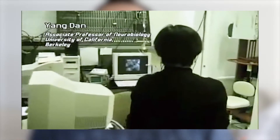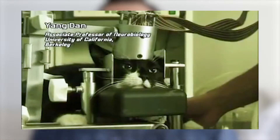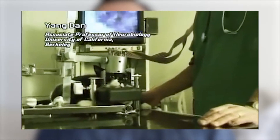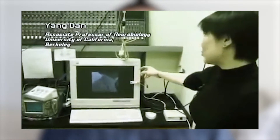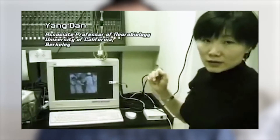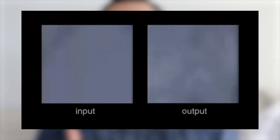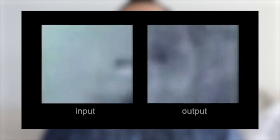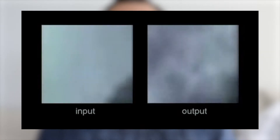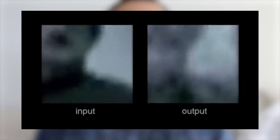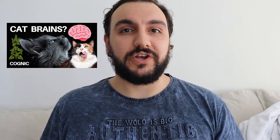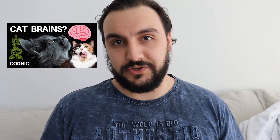In 1999, Dr. Yang Dan at the University of California, Berkeley, showed cats movies and recorded their brain activity. Using the brain activity, she reconstructed what they were seeing in surprising detail. Remember, this was 22 years ago, and the fact that she accomplished this with the technology of the 1990s is extremely impressive. On the left we see the movie shown to the cat, and on the right we see the reconstructed video made from the cat's brain activity. You can clearly see that the video on the right is just a noisy version of the video on the left — meaning Dr. Yang Dan successfully used this cat as a camera. I actually made a video about cat brains that included this research, so I'll put a link in the description.